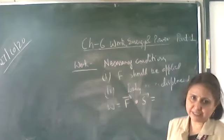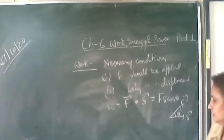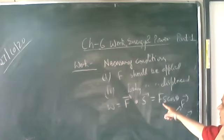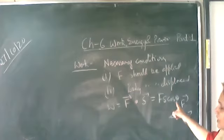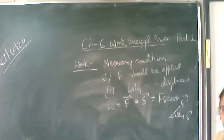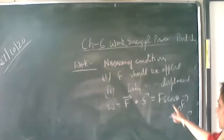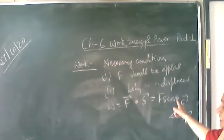If the angle between force and displacement is theta, then work done can be written as F into S into cos theta. If force and displacement are in the same direction — theta equals 0 degrees — then cos 0 equals 1, and work done equals F into S.